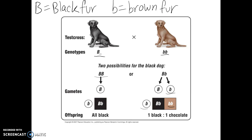This is an example of a test cross: take an individual of unknown genotype, cross them to a homozygous recessive individual, and observe the offspring. They will indicate whether that dominant-looking parent has that recessive allele or not.